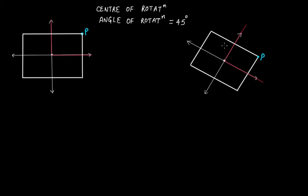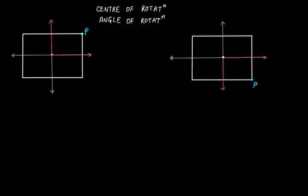We further rotate it by another 45 degrees, so from the initial position we have now rotated by 90 degrees total. When we rotate it by 90 degrees, the highlighted parts move to their new positions. Now, at an angle of rotation of 90 degrees, these two figures are exactly the same — therefore, for a square, we have rotational symmetry at 90 degrees.